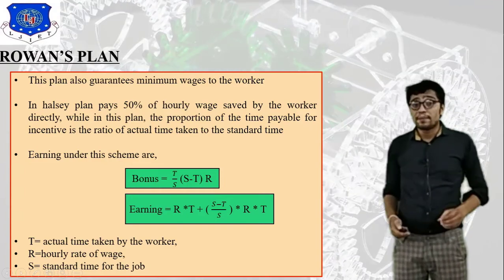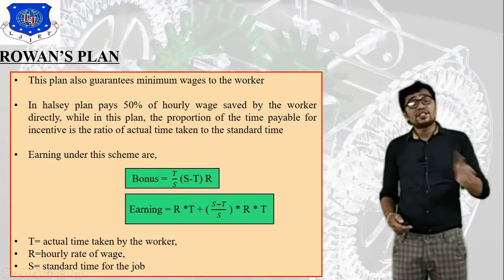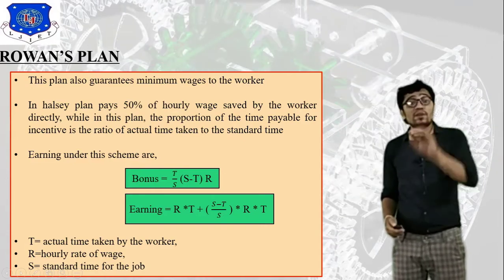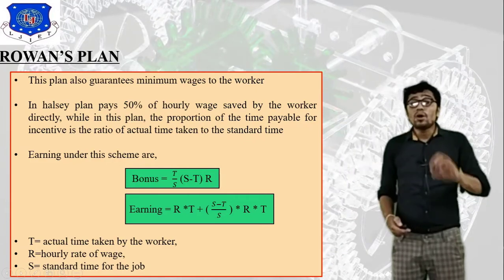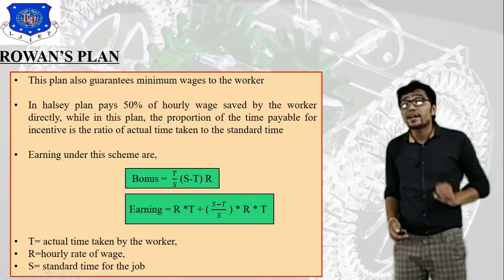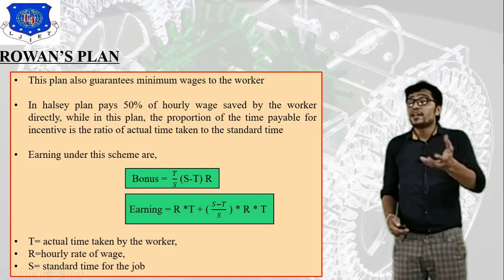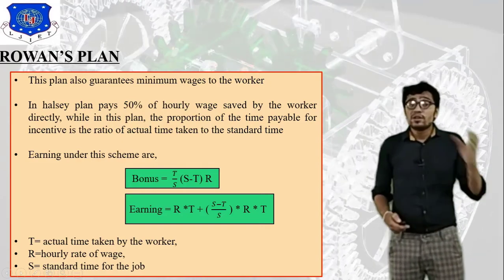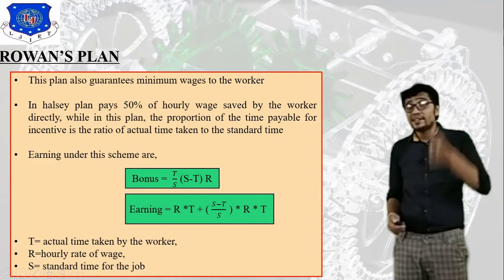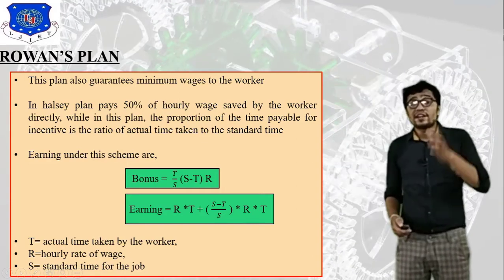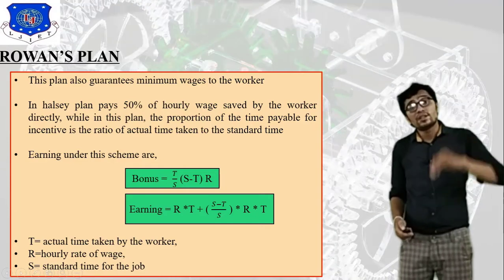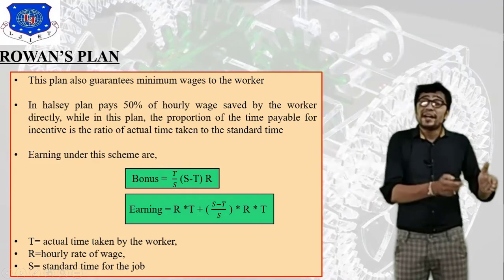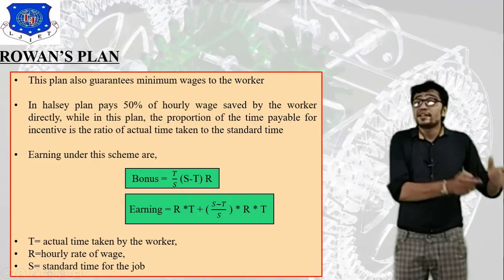For example, standard time S = 2 minutes and actual time T = 1 minute. Put all the values into the earning equation to get the total wages. Rowan's plan is very important: in the Halsey plan the 50% is fixed, but in Rowan's plan the incentive proportion is the ratio of actual time to standard time. This is the key difference between Rowan's plan and the Halsey incentive plan.